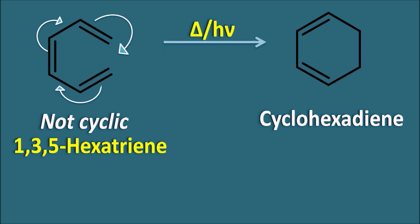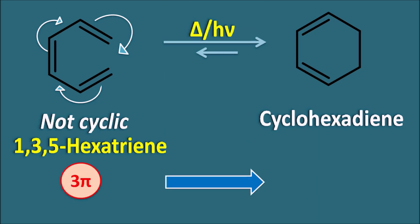These electrocyclic reactions are also reversible in nature. So cyclohexadiene can also be converted back to 1,3,5-hexatriene. But when we supply sufficient energy we can convert the reactant into the product. The hexatriene has three pi bonds which are converted into cyclohexadiene, which has two pi bonds along with the formation of a new sigma bond.